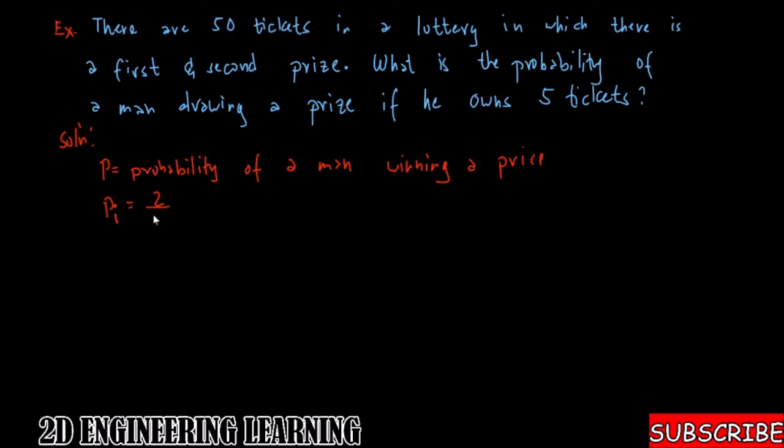But he owns five tickets, so his probability now is five times our initial probability, in which he if he only owns one ticket. So you have 5 × 2/50.